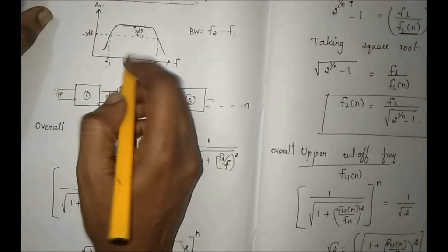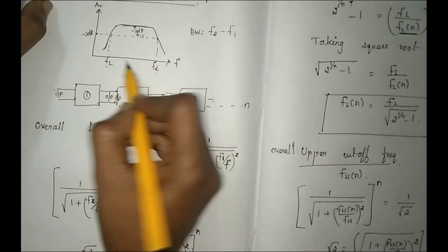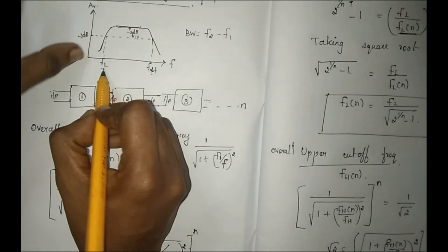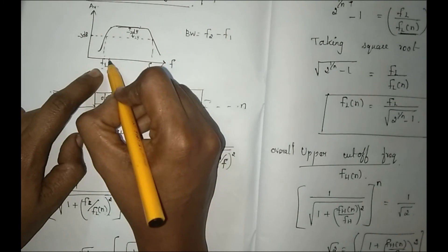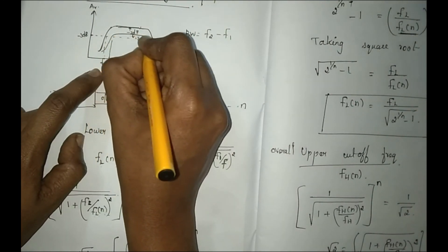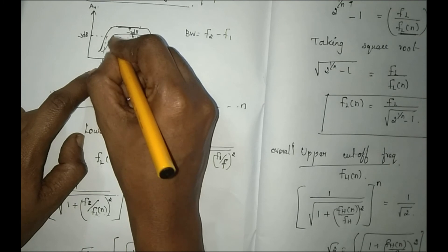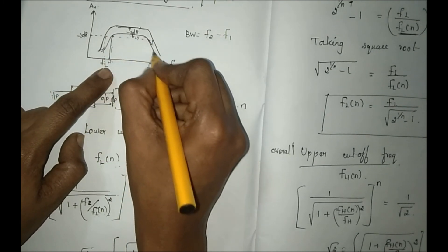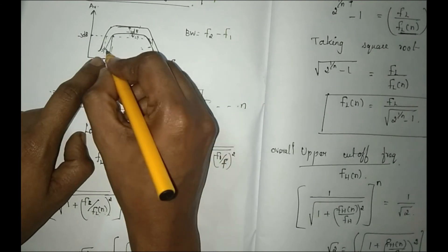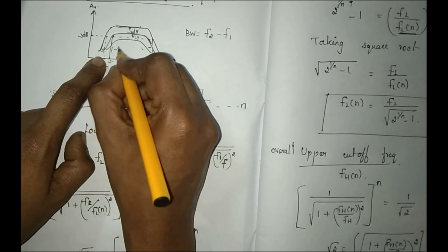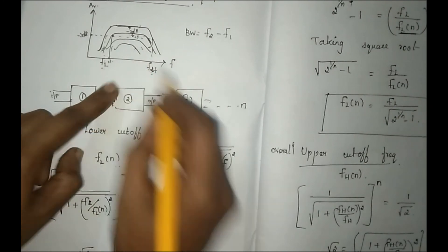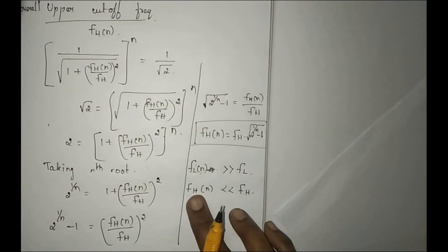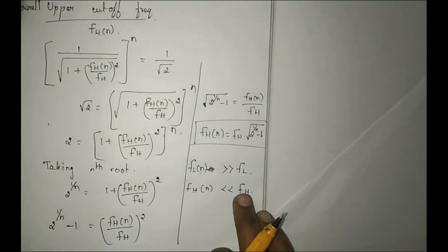This is the lower cutoff frequency for a single-stage amplifier, and this is the upper cutoff frequency. Now, looking at FL and FH: as the value of N is increased, the upper cutoff frequency will decrease. So the bandwidth will reduce. FL(n) is always greater than FL, and FH(n) is always less than FH.